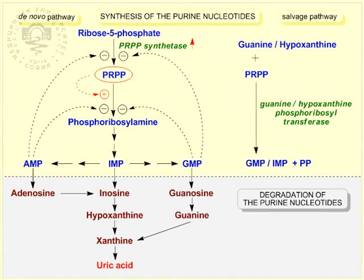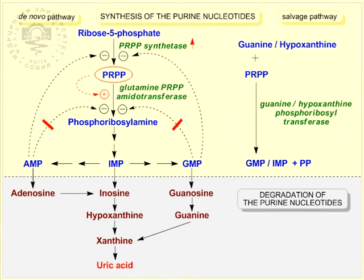Another reason for hyperuricemia can be the loss of allosteric sensitivity of the key regulatory enzyme, glutamine phosphoribosyl pyrophosphate amidotransferase, towards the end product. The mutated allosteric center becomes insensitive to the purine nucleotides, so the enzyme is not inhibited and stays active even though the nucleotides are sufficient or in excess. The amount of purine nucleotides increases, which is a reason for producing more uric acid.